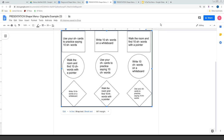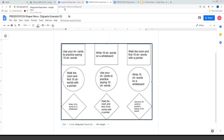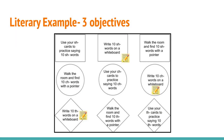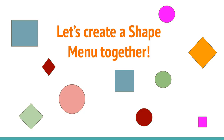Once you create the shapes, you can make a copy of that Google Doc and put anything in it — the shapes are there, you've done the hard work. Just make a copy, name it something else, and you'll have a whole new menu.